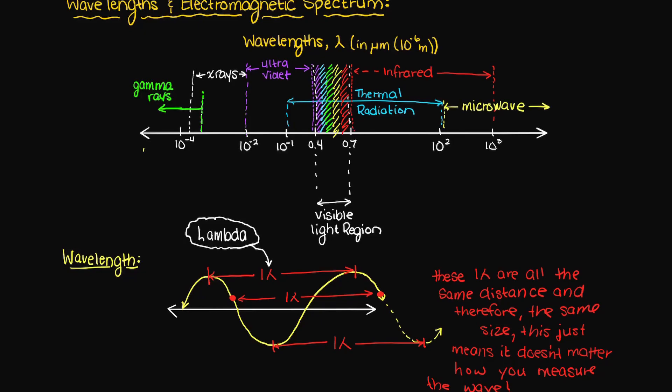So as you can see here, we can break up the electromagnetic spectrum into three main sections: wavelengths smaller than visible light, visible light, and wavelengths larger than visible light. But what does this all mean?